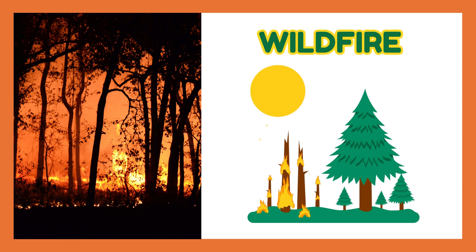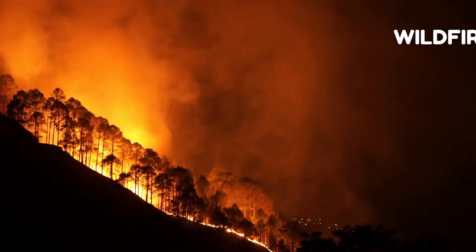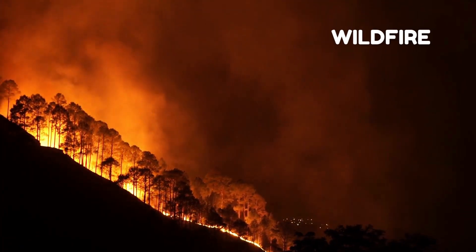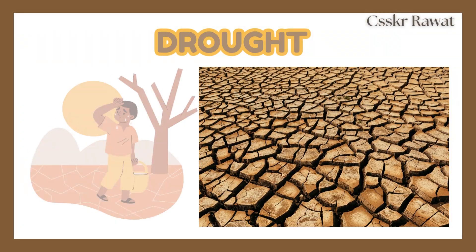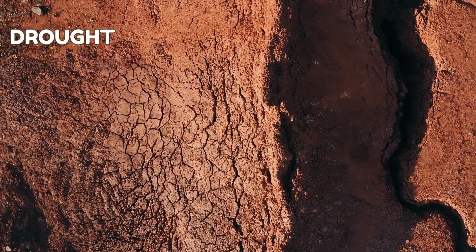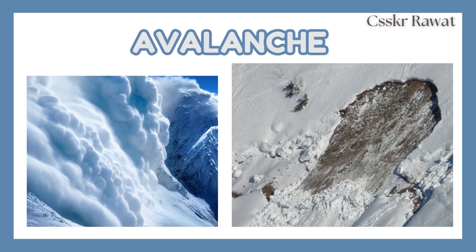Wildfire. Wildfires happen when a fire starts and quickly spreads in a naturally occurring area with lots of trees, bushes, and grass. Drought. Drought happens when there is insufficient rain for an extended period of time.